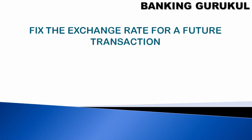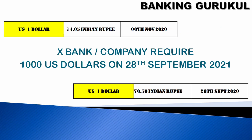This is called a forward contract in forex. For example, the values I've taken may not be exact — the rate may be different from day to day. My example: one US dollar is equal to 74 rupees 5 paisa today on 6th November. A bank or company requires some thousand US dollars on 20th September 2021, a future date, so they can book a forward contract.